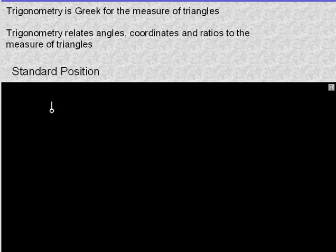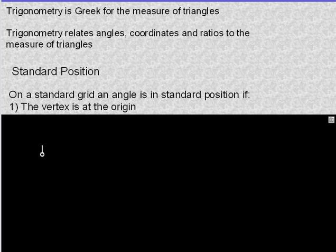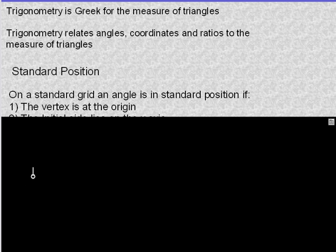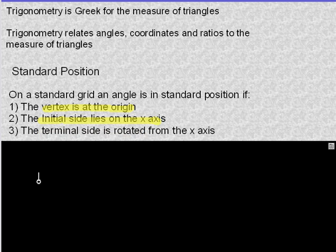So standard position — what does it mean? On a standard grid, that means an xy axis. An angle is in standard position if the vertex of the angle is at the origin. The initial side lies on the x-axis — that is the side that basically stays planted. The terminal side is the side that gets rotated to make the angle, so the terminal side is rotated from the x-axis.